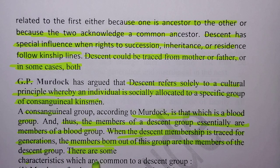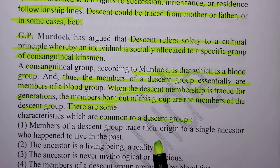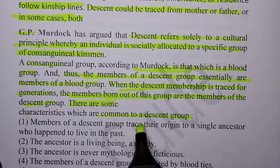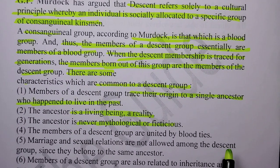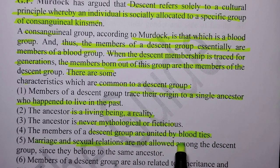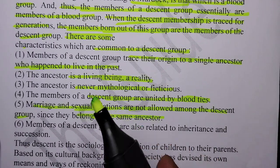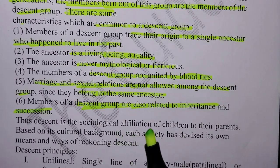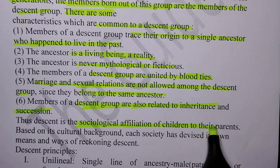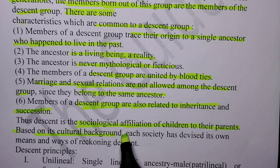There are some characteristics common to a descent group. Members of a descent group trace their origin to a single ancestor who lived in the past. The ancestor is a living being, a reality — never mythological or fictional. The members of the descent group are united by blood ties. Marriage and sexual relations are not allowed among the descent group since they belong to the same ancestor. Members of a descent group are also related through inheritance and succession. Descent is the sociological affiliation of children to their parents based on cultural background, and each society has devised its own means of reckoning descent.